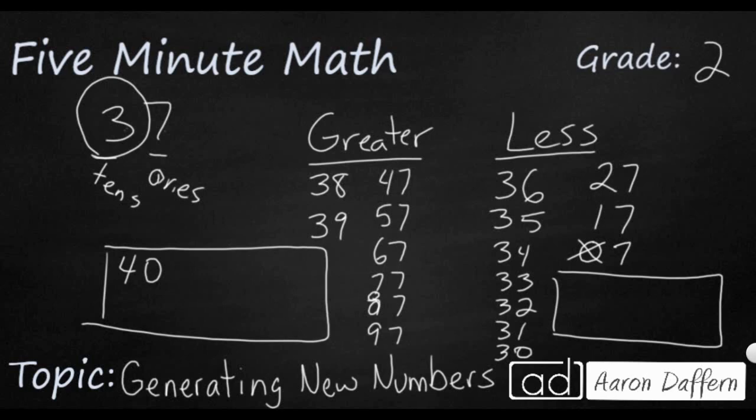Because even though this 0 is smaller than 7, I've got four tens and my original number only has three tens. So I can have 40. I can maybe say 53. So even though this 3 is smaller than the 7, the thing that matters the most is the largest place value.